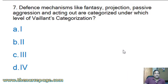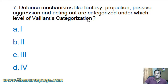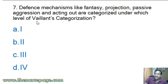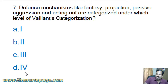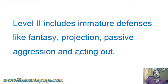Next question: 'Defense mechanisms like fantasy, projection, passive aggression, and acting out are categorized under which level of Weyland's categorization?' Options: level one, level two, level three, level four. The answer is level two — immature defense mechanisms. Level two includes immature defenses like fantasy, projection, passive aggression, acting out, etc.